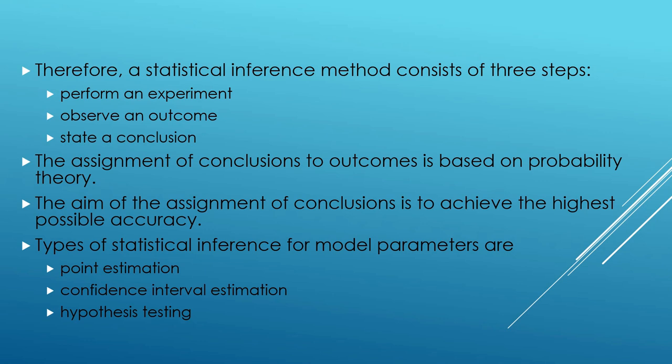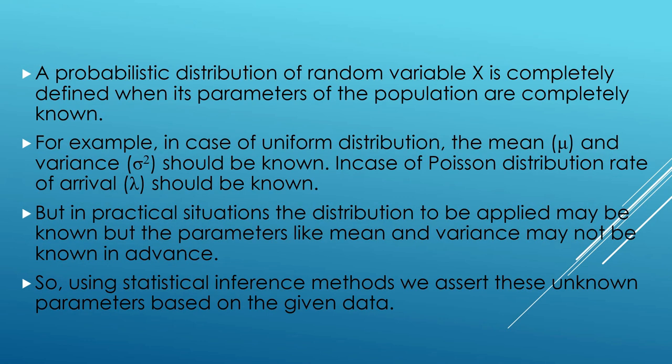A probabilistic distribution of a random variable x is completely defined when its population parameters are completely known. For example, in a uniform distribution, the mean μ and variance σ² should be known. In a Poisson distribution, the arrival rate λ should be known. But in practical situations, the distribution to be applied may be known while the parameters like mean and variance may not be known in advance. Using statistical inference methods, we estimate these unknown parameters based on the given data.